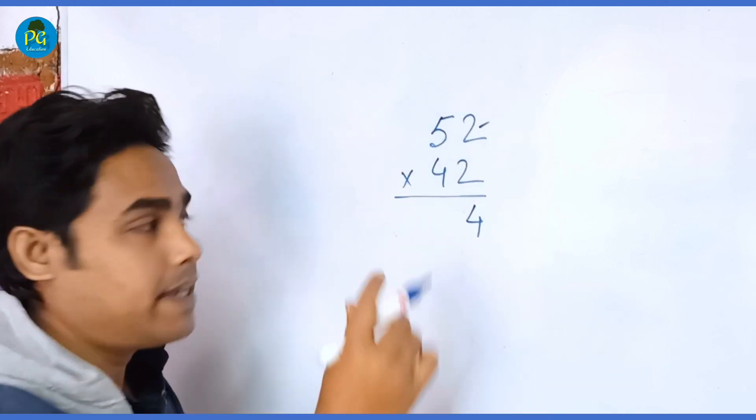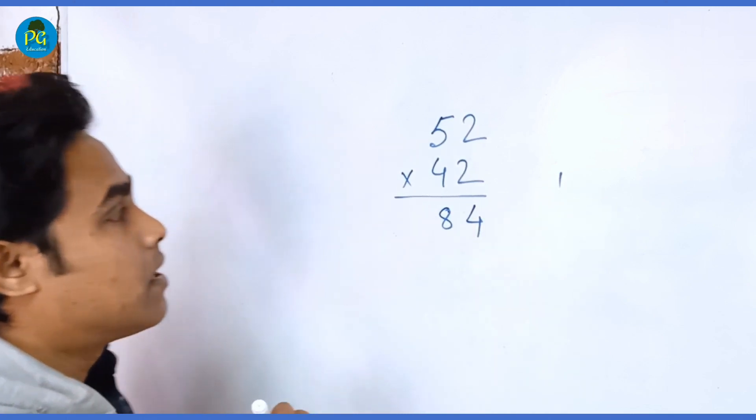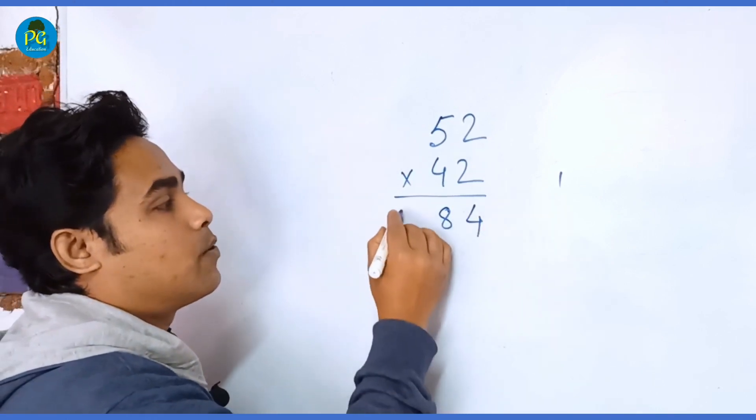So 9 into 2 is 18, right? Here 8 and 1 in hand. Now you multiply 5 into 4, 20. 20 plus 1 is 21.